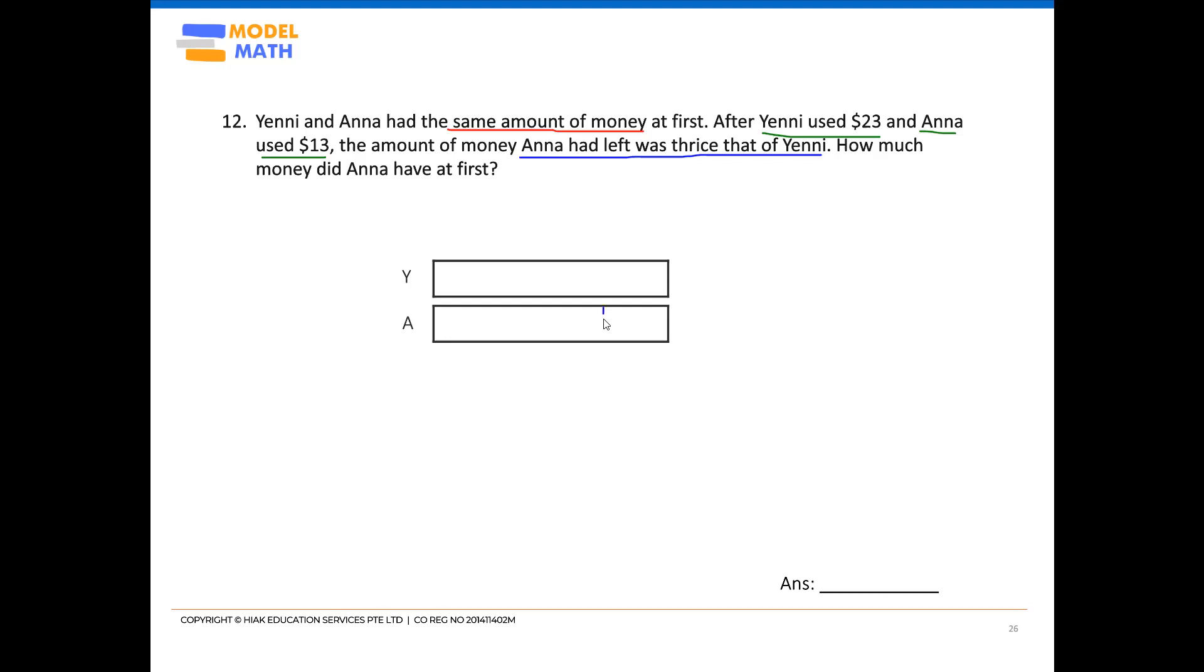So you should be cutting it using a dotted line. Why is it that I'm choosing to cut Anna first? Because after cutting Anna, Anna would have three times of Yeni. Therefore, I can actually cut the remainder of Anna's model into three units.